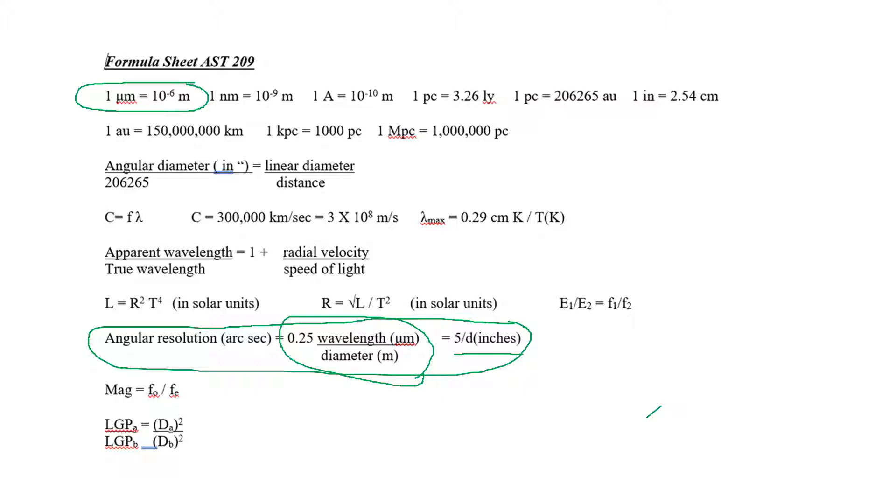But in this formula, the 0.25 is already doing a whole bunch of unit conversions for you. So as long as the wavelength is given in micrometers and the diameter is given in meters, you will not have to do any unit conversions. But are you always going to be so lucky? I think not.